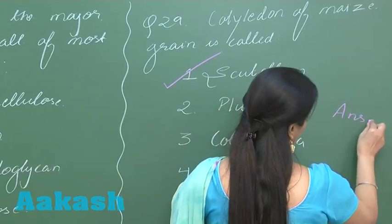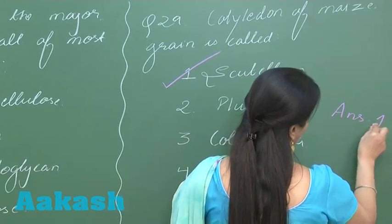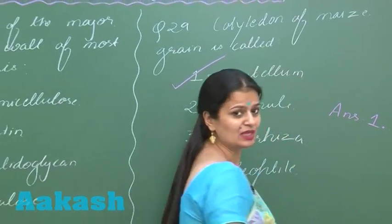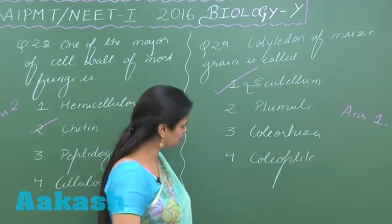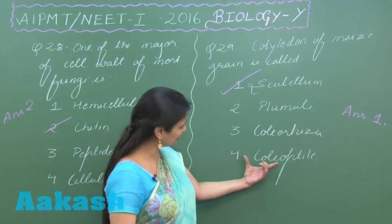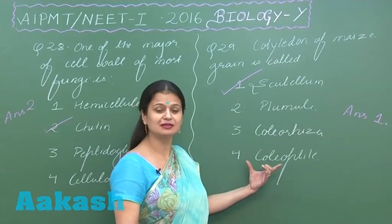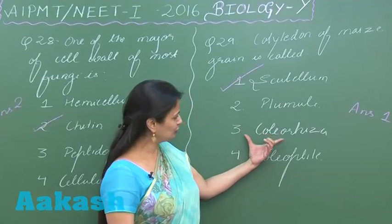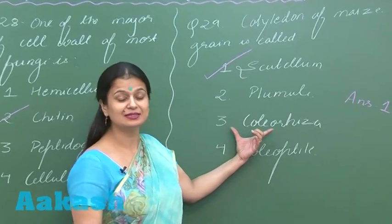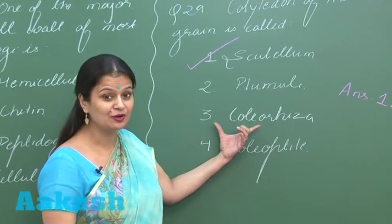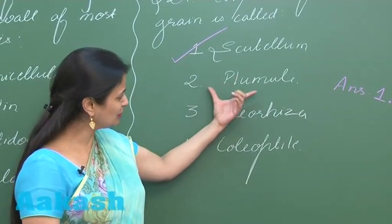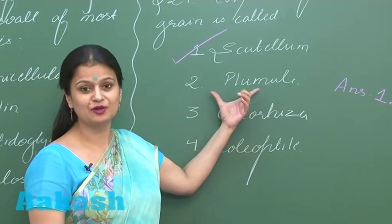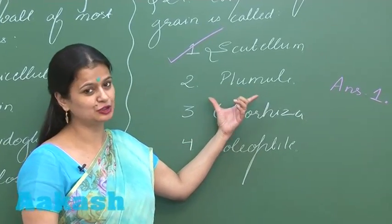So the right option here is option number 1. Looking at the other options: coleoptile is the covering of the plumule, and coleorhiza is the covering of the radicle. The plumule results in the formation of the shoot.